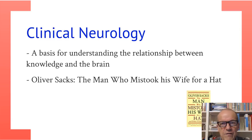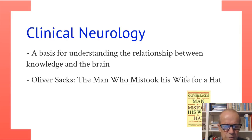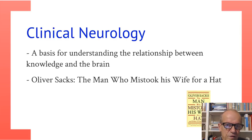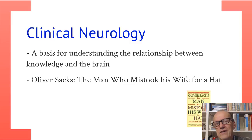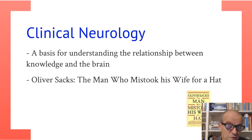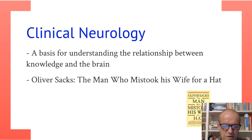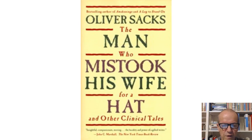An author who has done a lot to describe the connection between human functioning and the brain is Oliver Sacks. He has written many very interesting studies, all originating from pathology — people who have problems. One of the better-known examples is 'The Man Who Mistook His Wife for a Hat and Other Clinical Tales.'